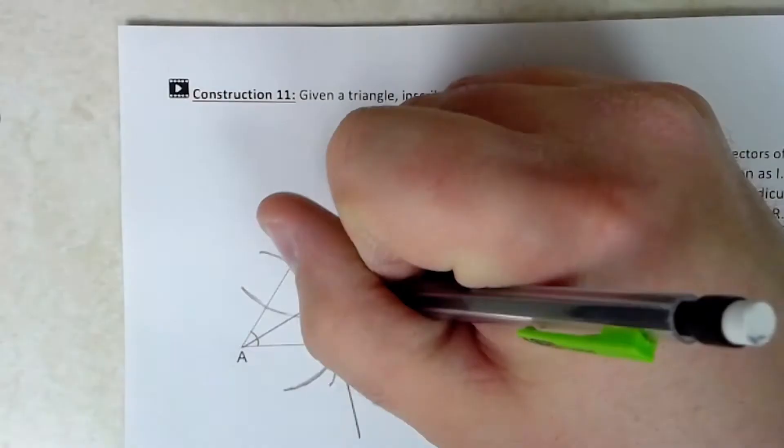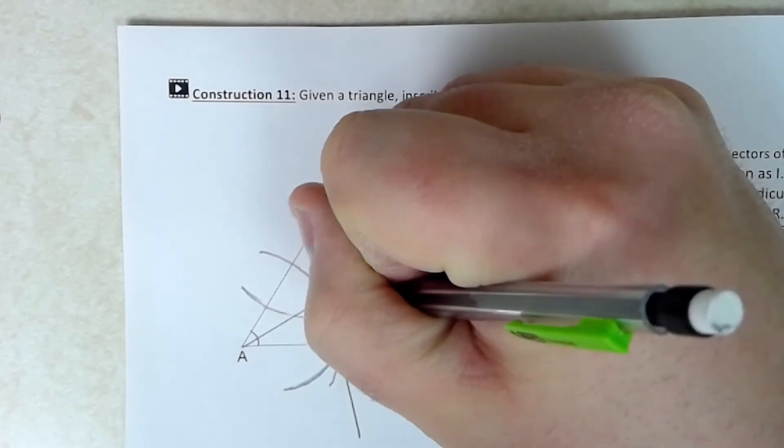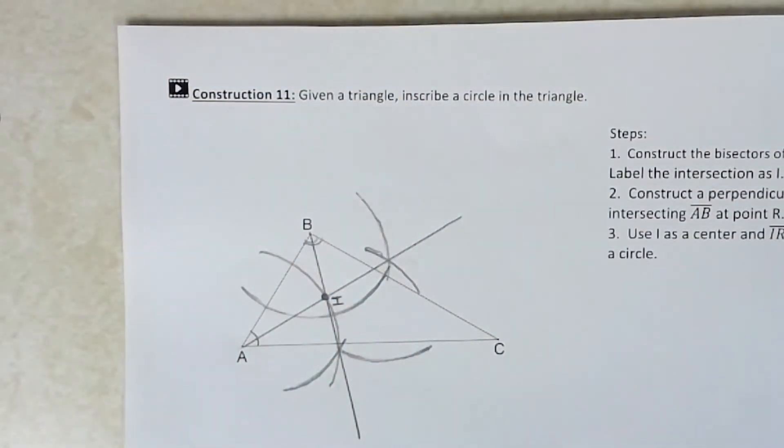So once I have my in-center, excuse me, I'm going to go ahead and label that as point I where my two angle bisectors intersect.